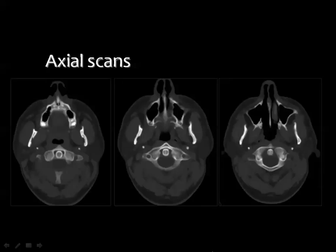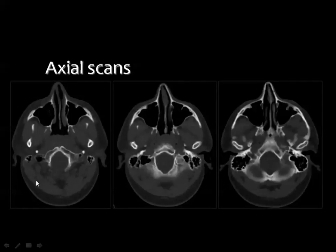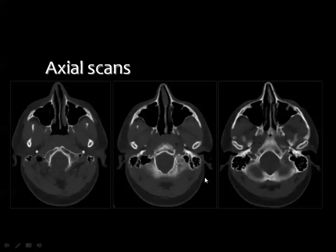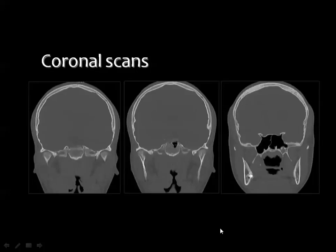Further upward you can see the maxillary sinuses, the pterygoid blades, the zygomatic bone, and the mandibular condyle, which will articulate with the temporal bone in the region of the temporomandibular joint. This is the zygomatic arch, maxillary sinus, bony nasal septum, pterygoid blades, and the pterygoid palatine fossa. In the coronal images starting from posterior, you can see the temporomandibular joints bilaterally.